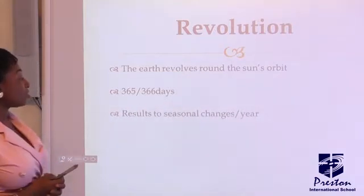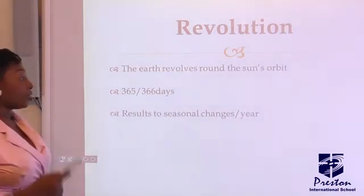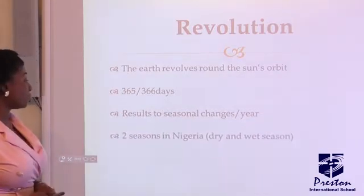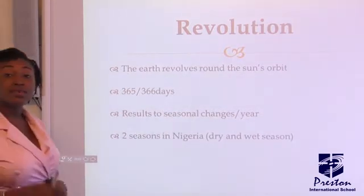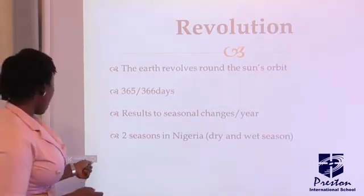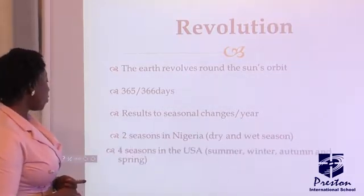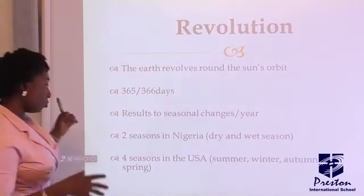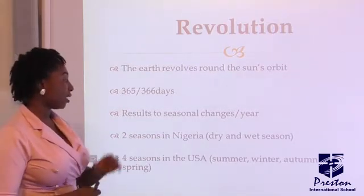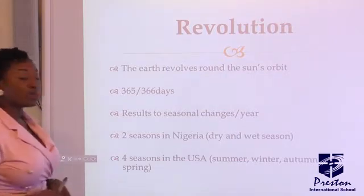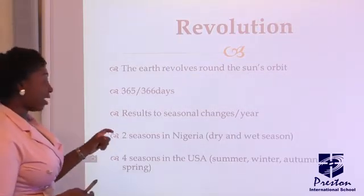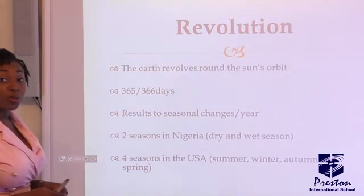The revolution of the earth results in seasonal changes — that is, one full revolution equals one year. In Nigeria we have two seasons: the dry season and the wet season. In the USA or UK they have four seasons: summer, winter, autumn, and spring. You are expected to find out the months and dates attached to each of these seasons.